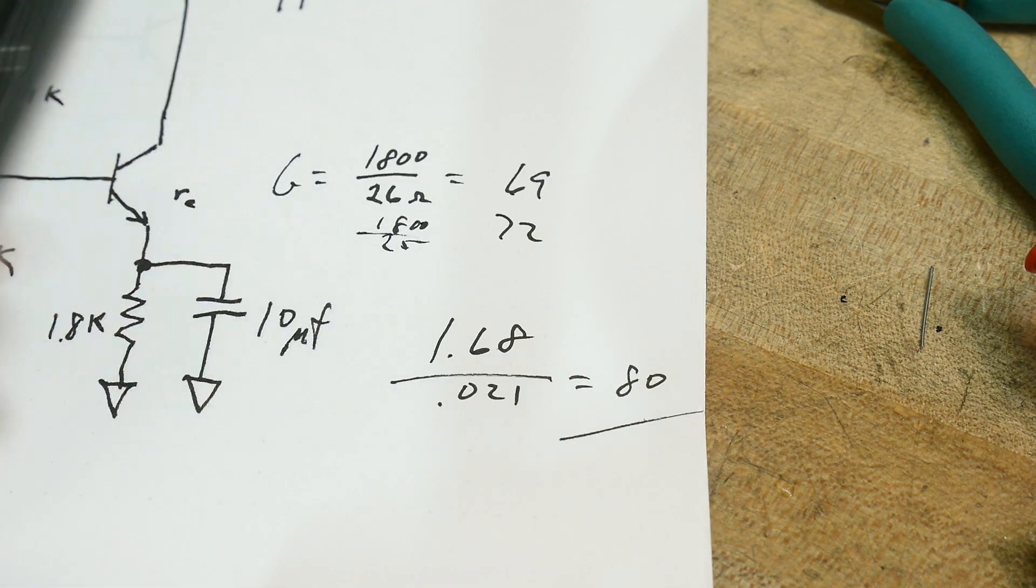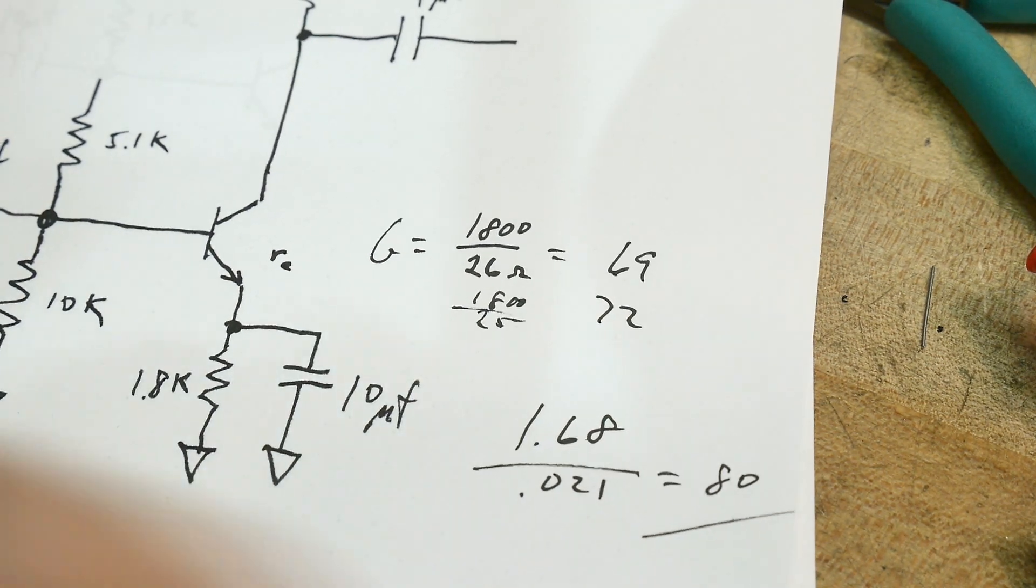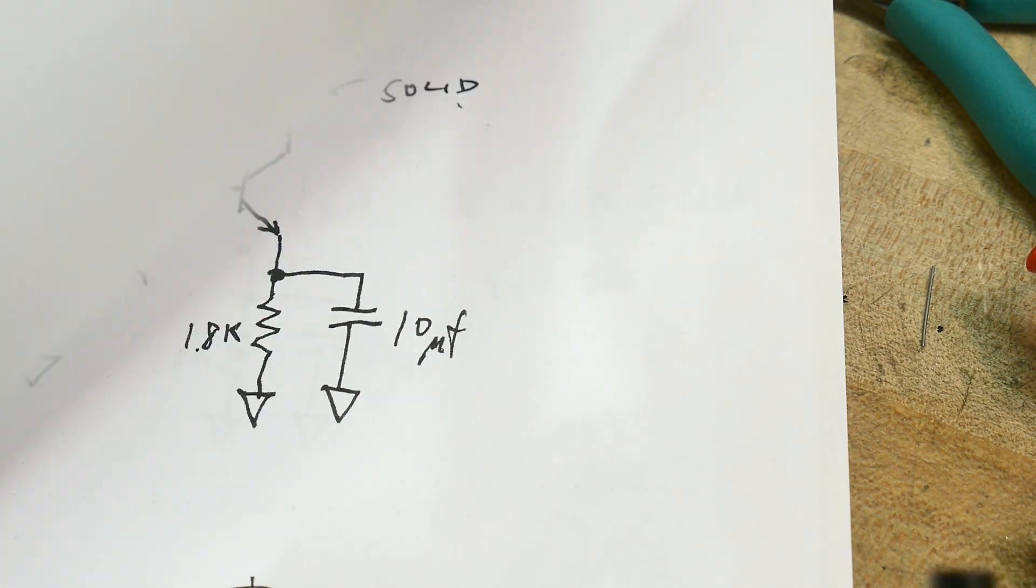So that would sort of explain this case. Now, what about the other case? What about this case? How do you calculate the gain in this case?